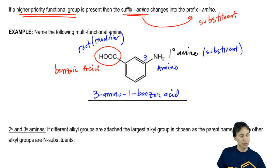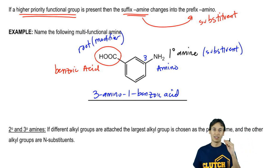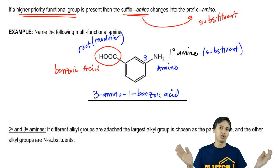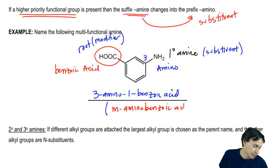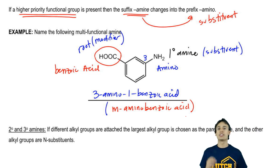You guys might recall that we actually have other types of nomenclature to denote these one, two, one, three, and one, four relationships. This would also be probably more commonly referred to as meta-amino benzoic acid. Remember that when you use the words meta, ortho, and para, they're just stand-ins for one, two, one, three, one, four.